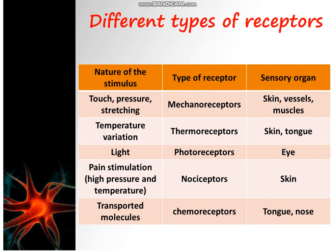Let's see now the different types of receptors and the different types of stimuli. For mechanical stimulations like touch, pressure, and stretching, the receptors able to detect mechanical stimulations are called mechanoreceptors. We find mechanoreceptors in the skin for touch and pressure, in the vessels for pressure, and in the muscles for stretching.